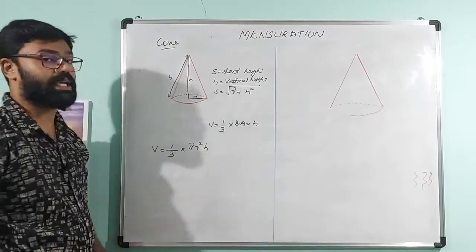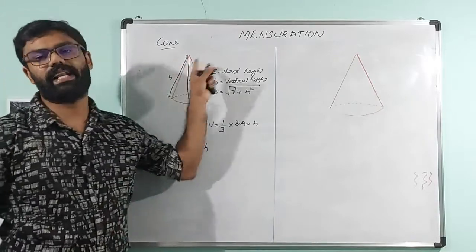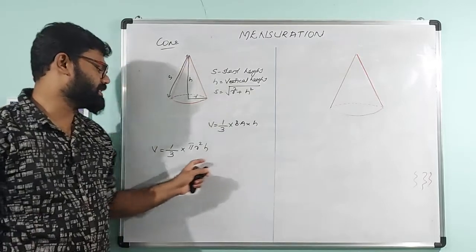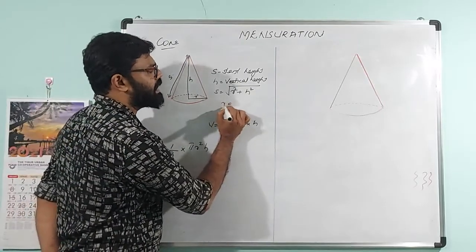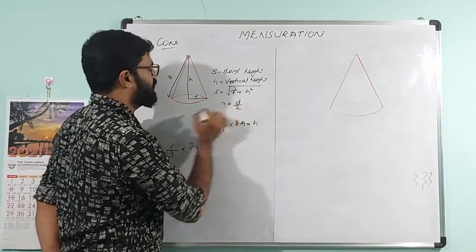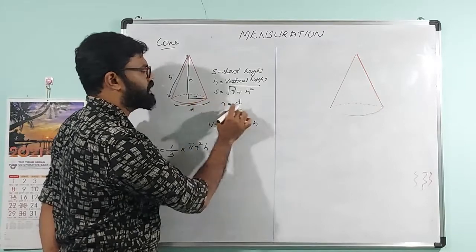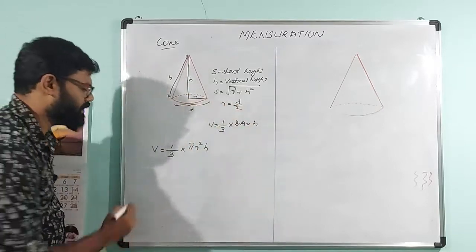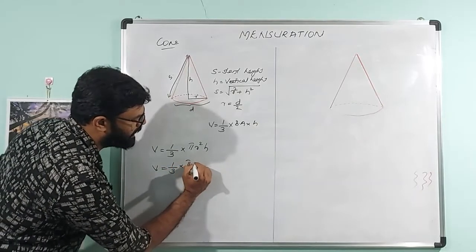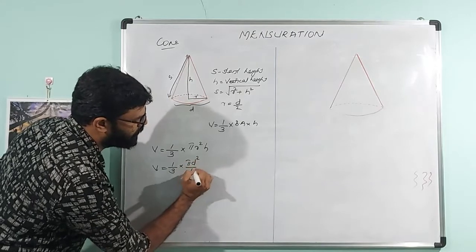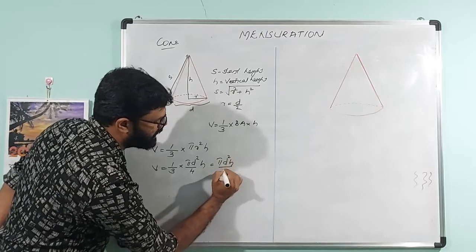So the volume formula is 1 by 3 into π r² into h (vertical height). If we use diameter, V is equal to 1 by 3 into π d² by 4 into h, which rearranges to π d² h by 12.